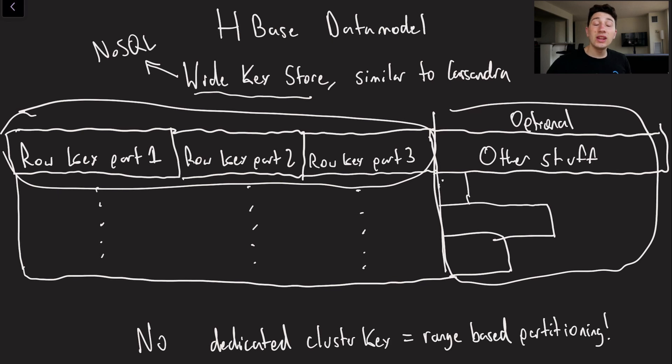Now of course you could be smart about this and literally take what would have been your row key and just put in the hash of that part over there, and then that effectively becomes hash-based partitioning.